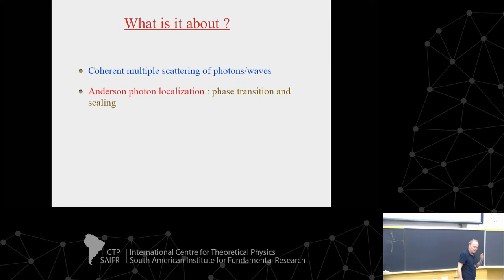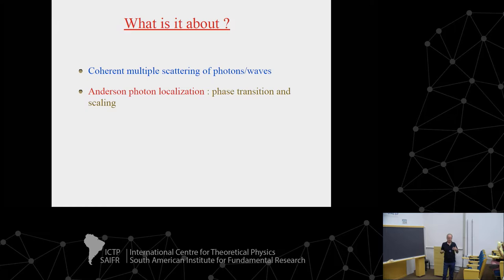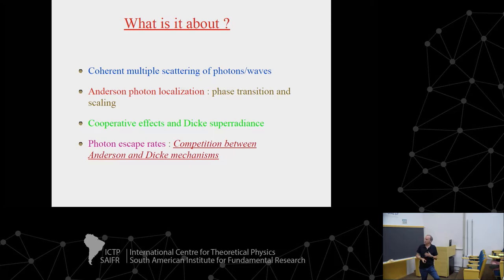I will not follow those papers closely, but will try to give you the idea. So what is this about? It contains two ideas that we tried to put together. The first idea — coherent multiple scattering of photons, Anderson photon localization, phase transition and scaling — you already heard about. The second ingredient, which I have not discussed so far, is cooperative effects and decay superradiance, and the competition between those two physical effects.